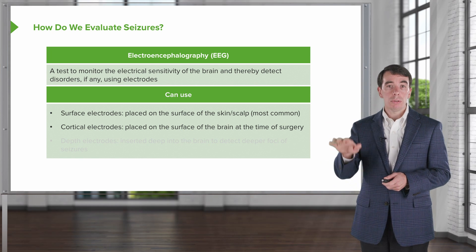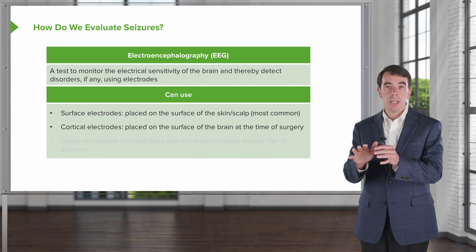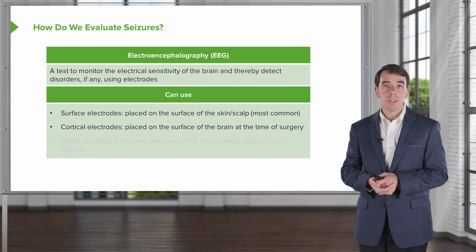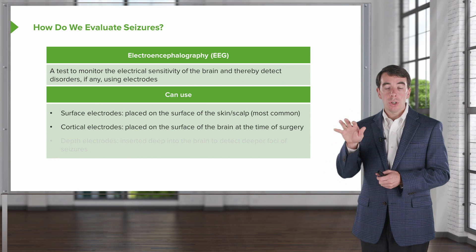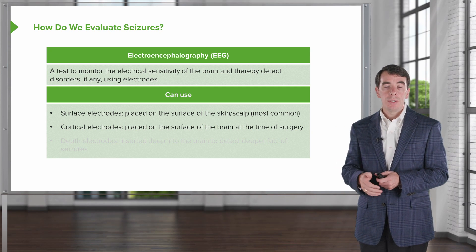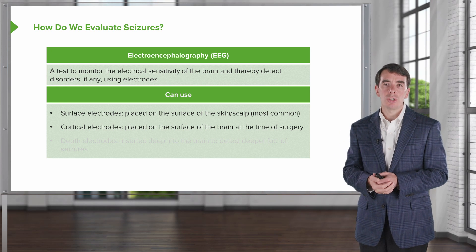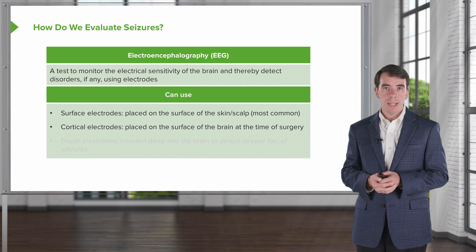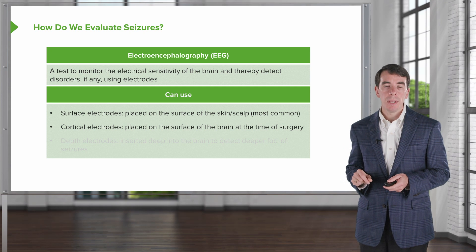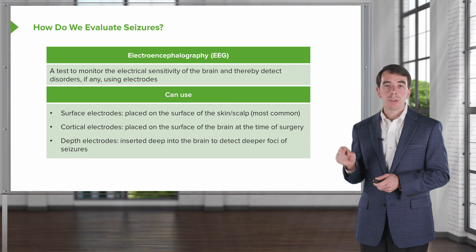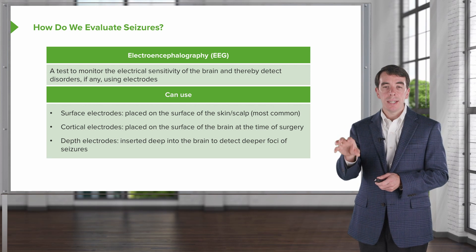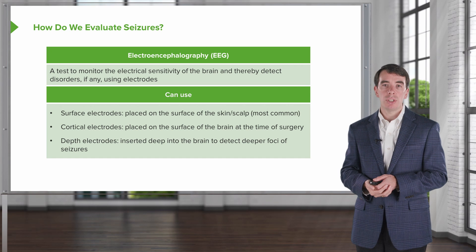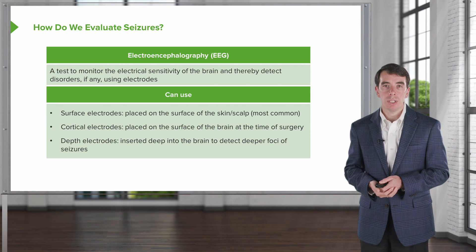Sometimes we'll use cortical electrodes. These are placed at the time of surgery when a patient has a craniotomy to take off the skull, and electrodes are placed onto the surface of the brain. This is a very sensitive and precise way to evaluate seizure foci right on the surface of the brain. But even then, sometimes we can't detect a seizure that may have a very deep focus. So the third type are depth electrodes — inserted deep into the brain to detect seizures originating from deep foci within central structures.